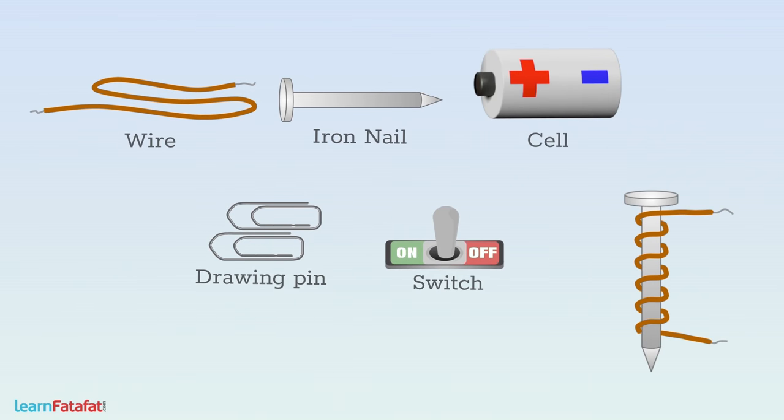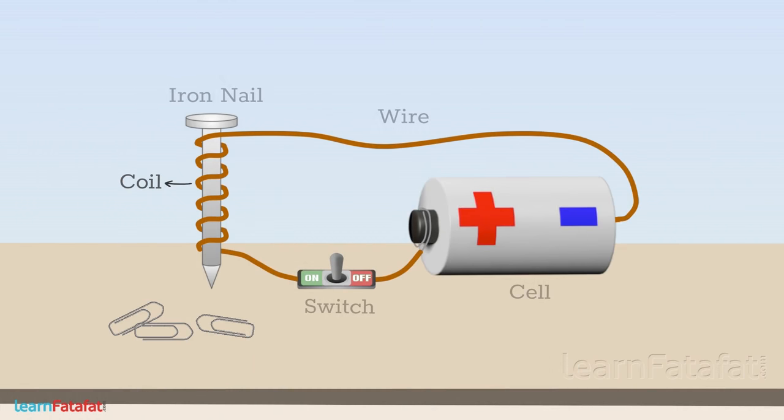Wind the insulated wire around the iron nail tightly forming a coil. Make a circuit as shown and connect the free ends of the wire to the circuit through the switch. Put some pins near the nail.